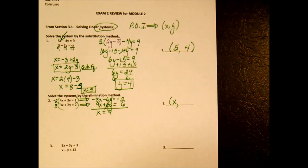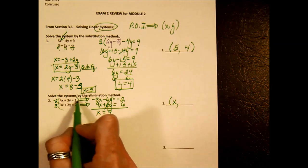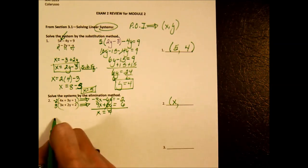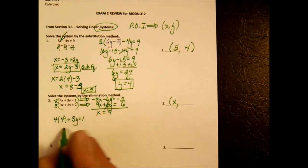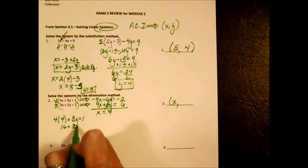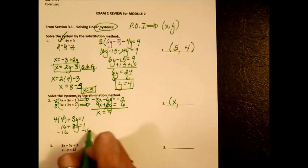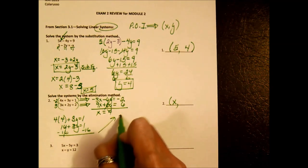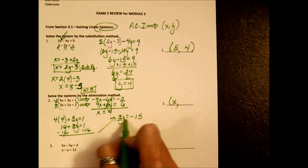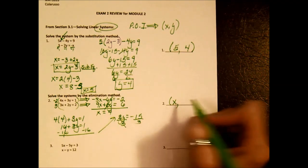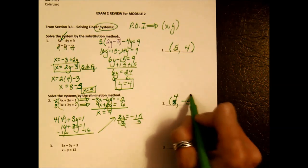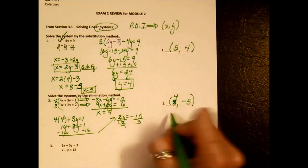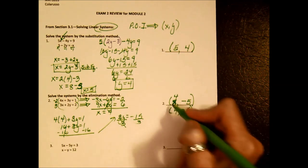Unlike the substitution method, I don't have a handy equation to go back to. So I'll use the original equation, fill in my x, and solve for y. 4 times x plus 3y equals 1 gives 16 plus 3y equals 1. Getting variables on one side: 3y equals negative 15. Divide by 3, and y equals negative 5. Our point of intersection is the point (4, negative 5).